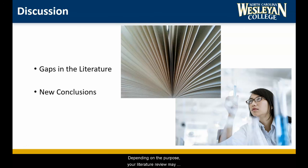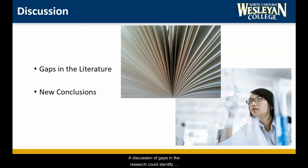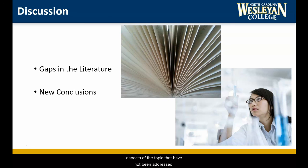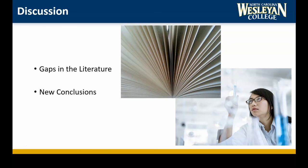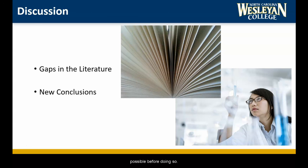Depending on the purpose, your literature review may also include one of the following sections. A discussion of gaps in the research could identify research methods that have not been tried, variables that have not been considered, and aspects of the topic that have not been addressed — basically, anything that the existing literature doesn't do, cover, or agree on, and that you believe would benefit study of the topic. This information should be included in literature reviews that attempt to explain the reasons for your own primary research, or that look to the future of research in the field. A discussion of new conclusions uses the patterns identified by synthesizing many different sources to make a claim that may not have been possible before doing so.